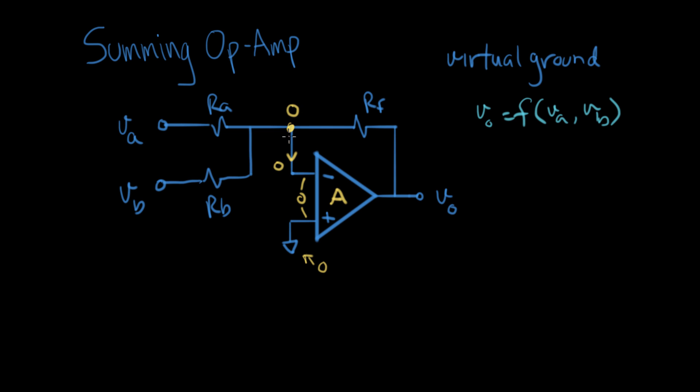We have zero volts on this node and zero current going this way. Let's figure out this current right here. We'll call that I, and we can express I in terms of VA, VB, and these resistor values. We have IA here and IB flowing here, so I equals IA plus IB.